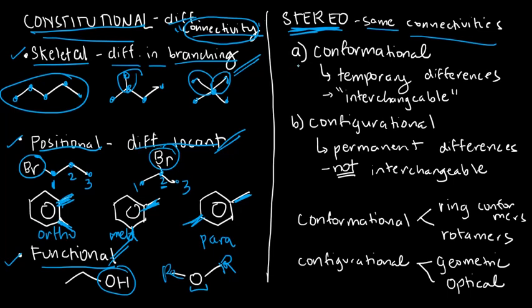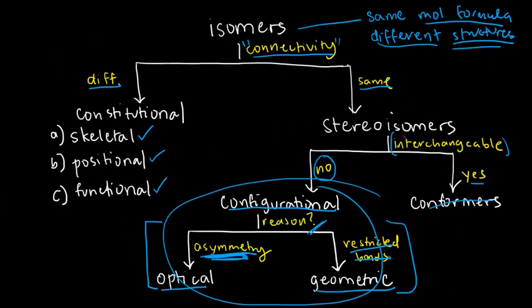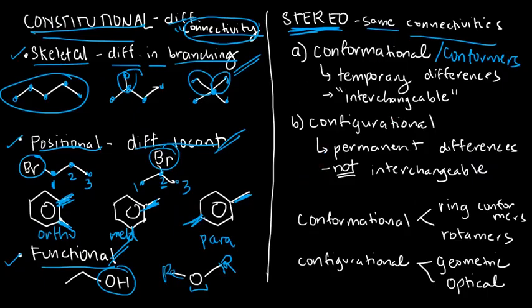Remember the word interchangeable: yes for conformers, no for configurational. Conformational isomers are interchangeable — meaning, by mere rotating or twisting of bonds, you can convert one stereoisomer into the other. But for configurational isomers, you are incapable of converting one isomer to another without breaking a bond.